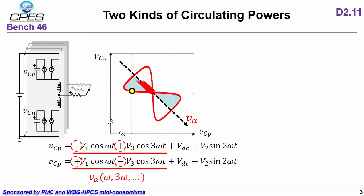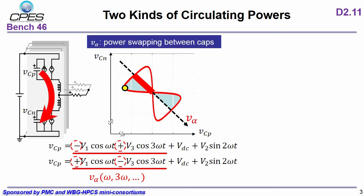When the trajectory moves along V-alpha, VCP will decrease and VCN will increase, which means the power is transferred from upper arm to lower arm. So this axis provides us the information of power swapping between two capacitors.